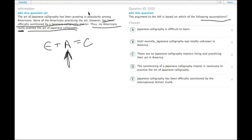The difficulty of learning calligraphy is totally not it. Whether calligraphy was known in America is irrelevant. It doesn't matter whether calligraphy masters are living in America—you could go to Japan to be sanctioned.